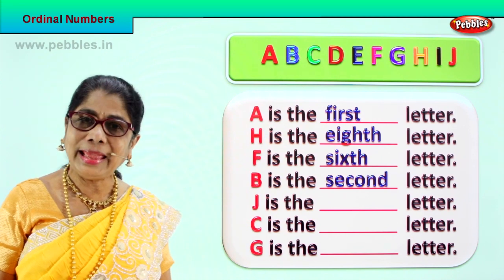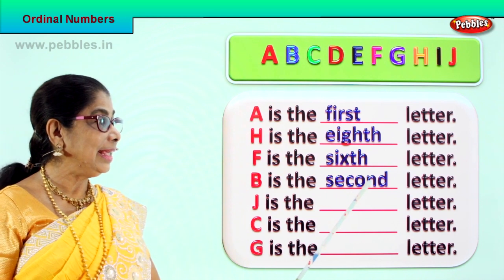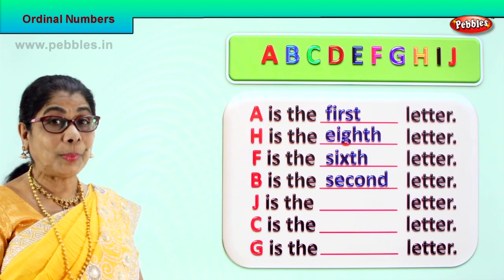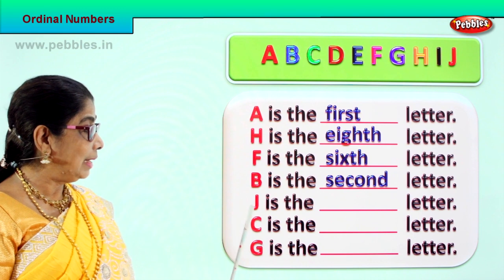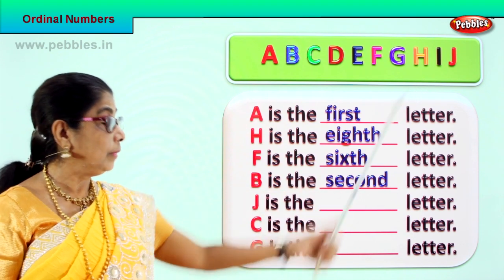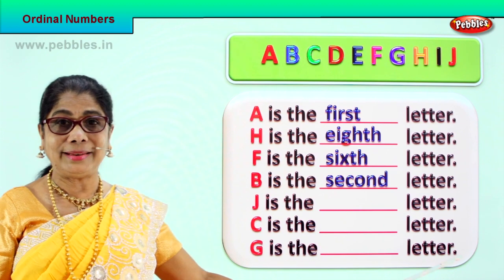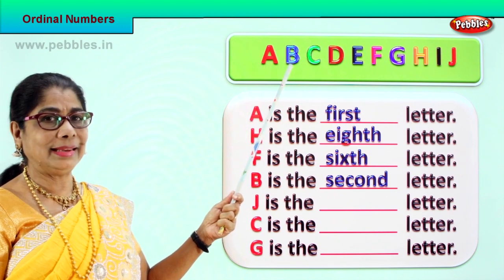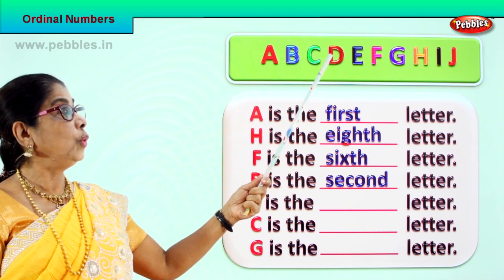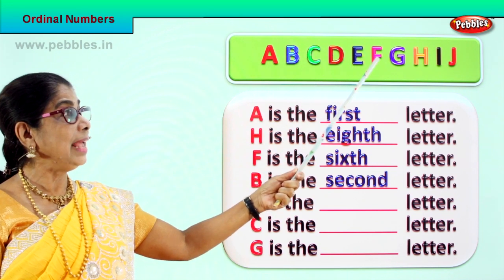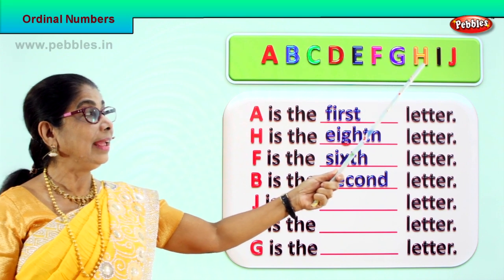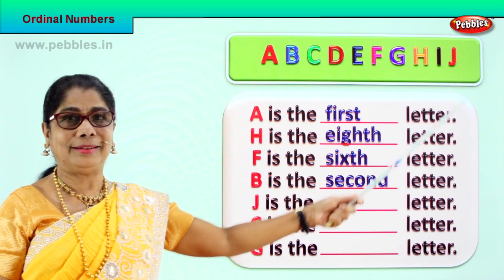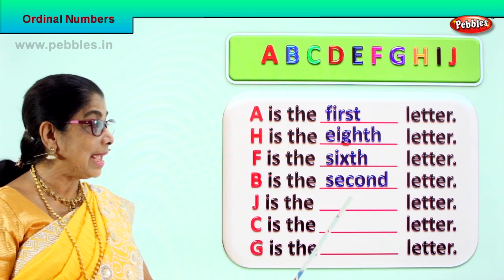Spell second: S, E, C, O, N, D — second. Very good. So we are learning the spellings of the ordinal numbers. Now here is letter J. Let's find J's place: first, second, third, fourth, fifth, sixth, seventh, eighth, ninth — J is the tenth letter.